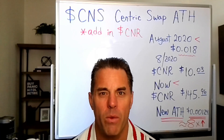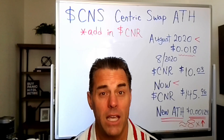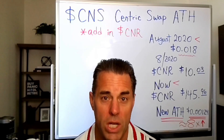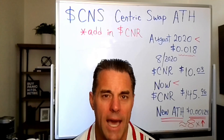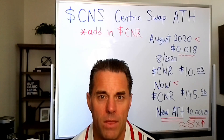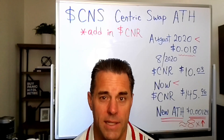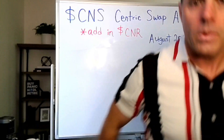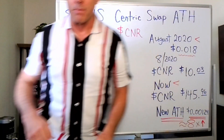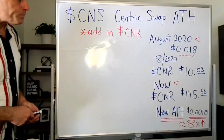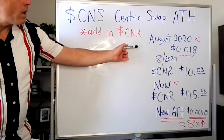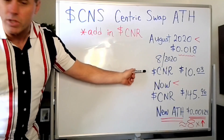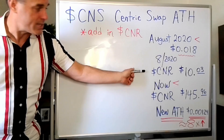So one of the things I wanted to show you today is that if we're being accurate, we really have a new all-time high that we're going to be approaching at some point. If we look at the numbers, the true all-time high for CNS really should be lower than 1.8 cents. Over here on the whiteboard we have 1.8 cents from August 3rd of last year, and this was the price of Centric Rise CNR at that time.